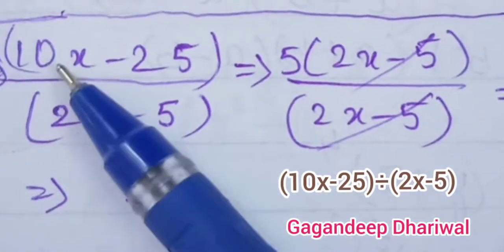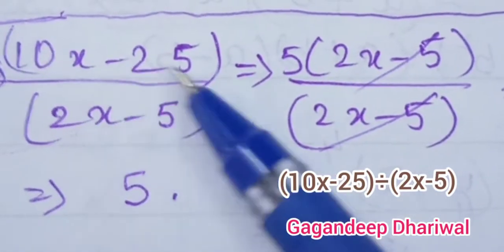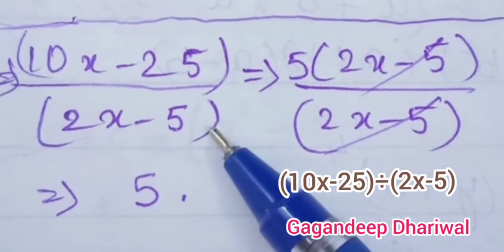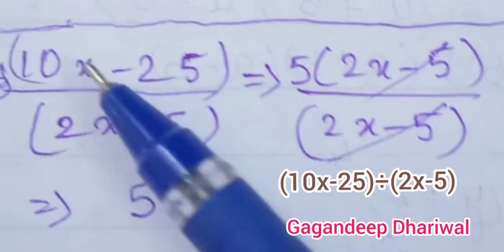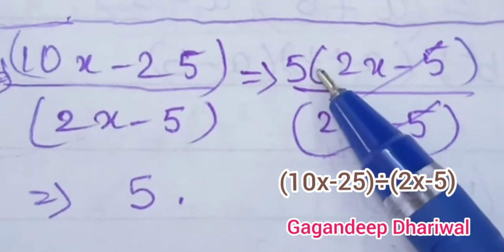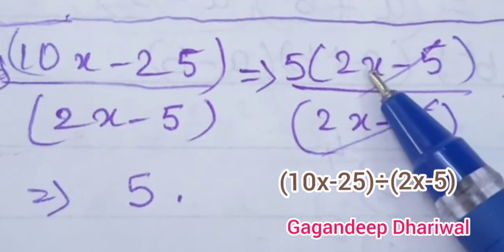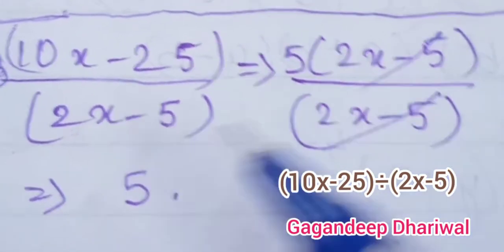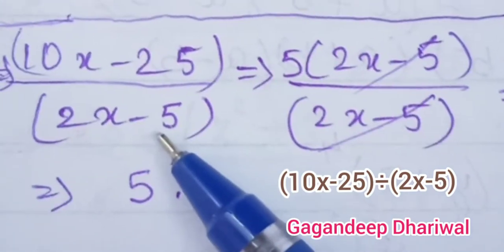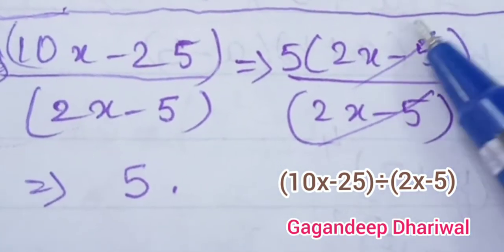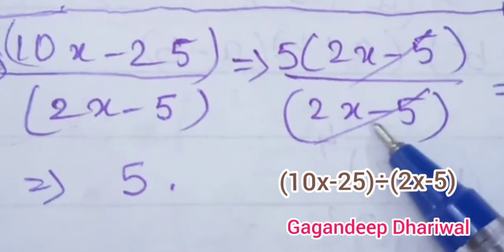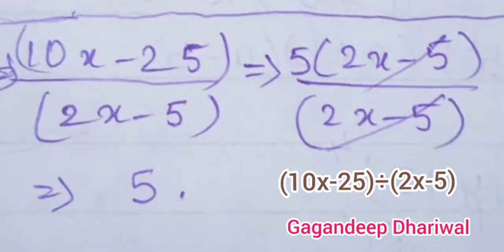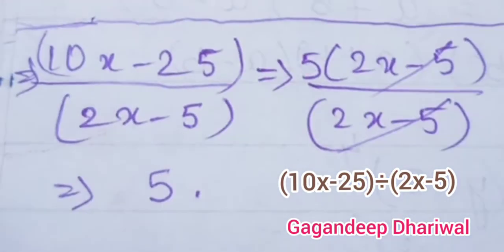See this question: (10x − 25) divided by (2x − 5). We can take 5 as common outside the bracket in the numerator, giving 5(2x − 5). In the denominator, there is (2x − 5). These two brackets are the same and cancel each other, so 5 is remaining — 5 is the answer.